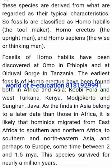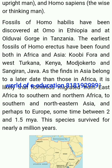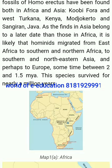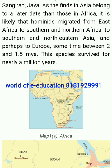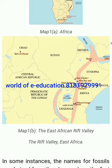Fossils of Homo habilis have been discovered at Omo in Ethiopia and at Olduvai Gorge in Tanzania. The earliest fossils of Homo erectus have been found both in Africa and Asia — at Koobi Fora and West Turkana in Kenya, and at Mojokerto and Sangiran in Java. As the finds in Asia belong to a later date than those in Africa, it is likely that hominids migrated from East Africa to Southern and Northern Africa, to Southern and Northeast Asia, and perhaps to Europe, sometime between 2 and 1.5 million years ago. This species survived for nearly a million years.